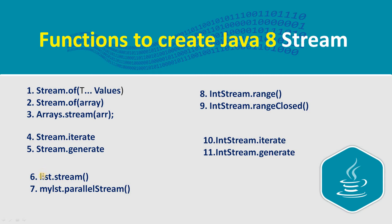The next one is list.stream — here this list is from the Collection API. You have your ArrayList and you call .stream(), and this function will convert your list into a stream. Similarly, you can also use parallelStream on a list.